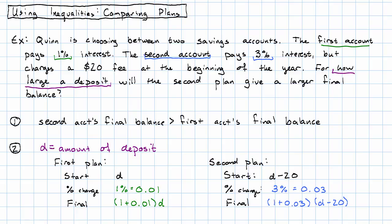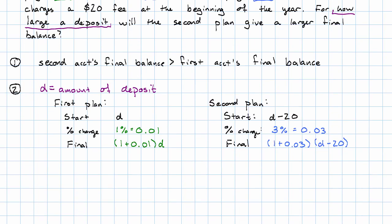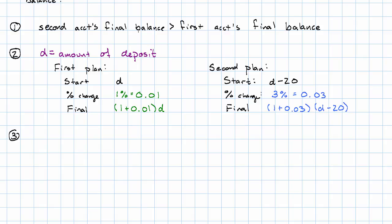Now we're ready to put this into our inequality. The second account's final balance, that's this, 1 plus 0.03 times D minus 20, is greater than the first account's final balance. That's this, 1 plus 0.01 D. Now all that's left is to solve this inequality.